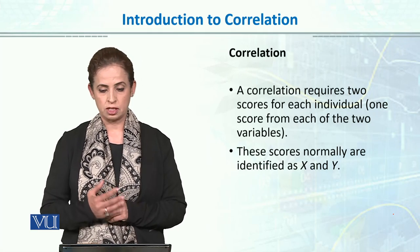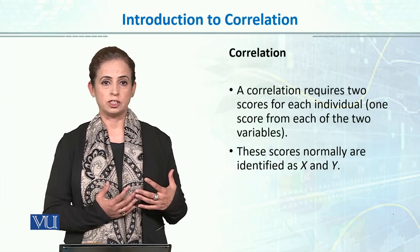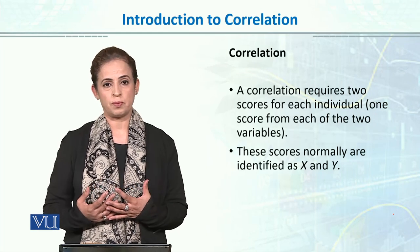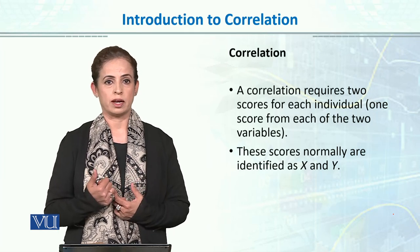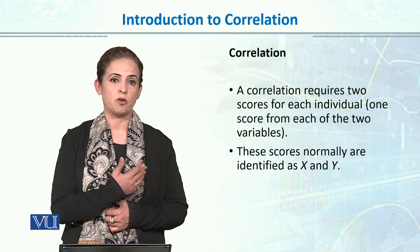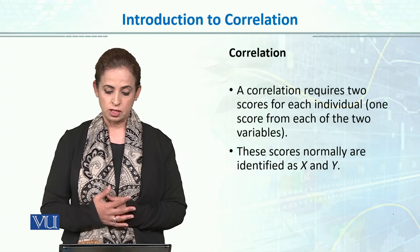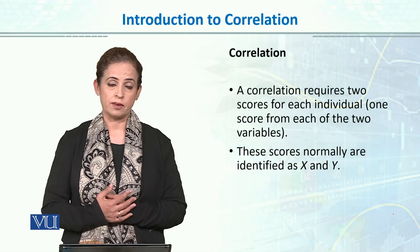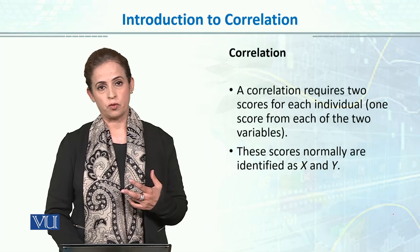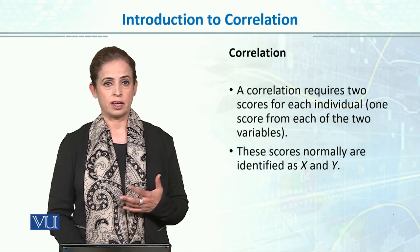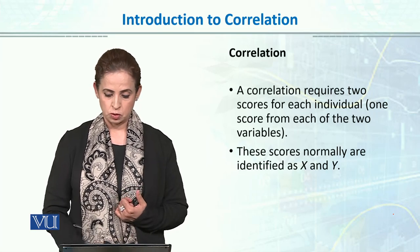Correlation requires two scores for each individual. For example, if I want to study the relationship between studying hours and my GPA, I will be needing two scores for both variables — one is the studying hours, like how many hours I study each day, and then the GPA for the same individual. These scores are normally identified as X and Y variables. So in correlation, there are two variables X and Y, occurring naturally in the environment, and we try to find out what is the relationship between the two variables.